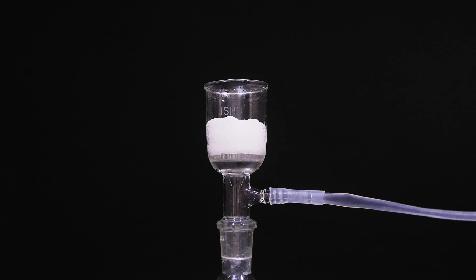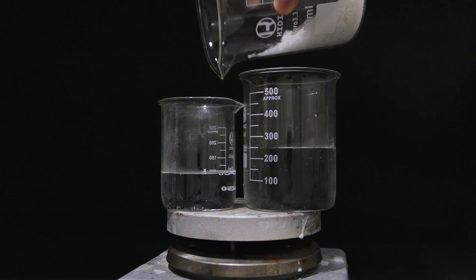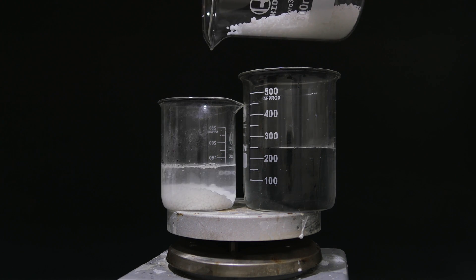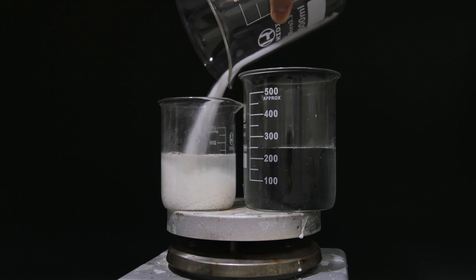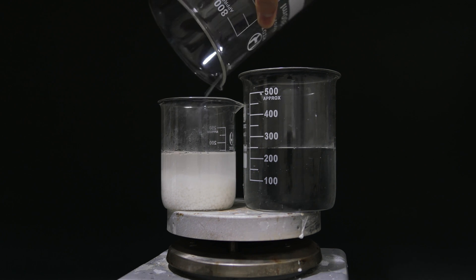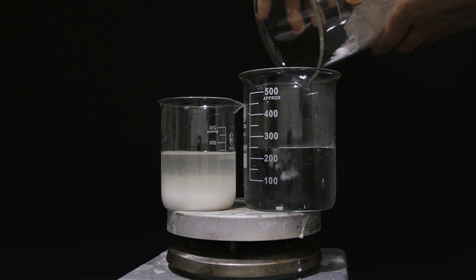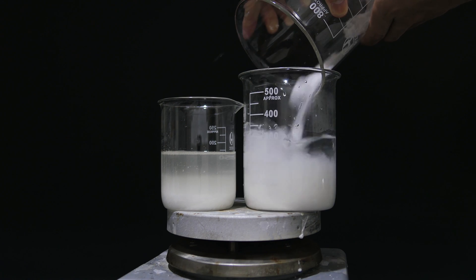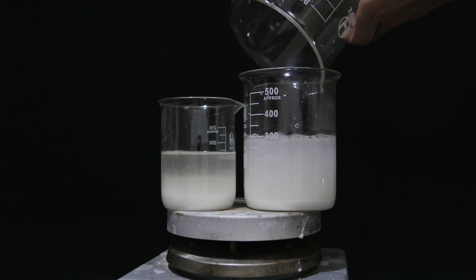Next, I need to make another precursor, barium nitrate. It's made by mixing equal molar amounts of barium chloride and calcium nitrate. Any nitrate salt can be used as long as its chloride salt has high solubility, like sodium nitrate or ammonium nitrate.